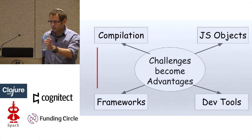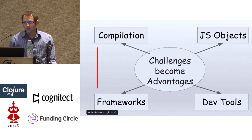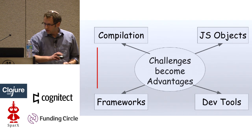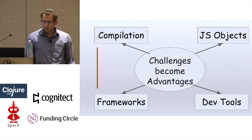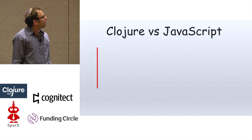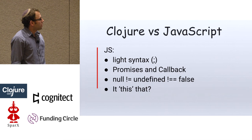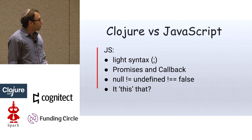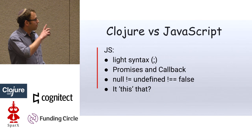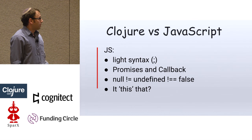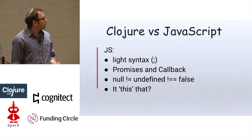Here are some of the challenges we faced when building Audix and how they became advantages. I don't think I'll manage to touch all four, but we'll see: compilation, JavaScript objects, frameworks, and dev tools. The obvious advantage we already have is that we're not using JavaScript. We don't have to put a semicolon, we don't have promises and callbacks, null doesn't equal undefined, and there's no 'this' object. If you've ever developed with JavaScript, you'll know why we want to avoid these things.